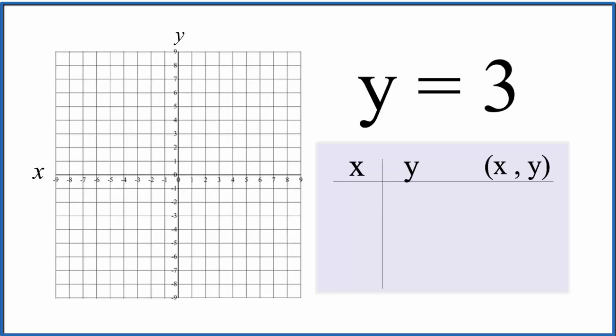So if we go to 3 on the y-axis here, 1, 2, 3, and put a horizontal line through it, this is the graph for y equals 3. Put some arrows to show that it goes to infinity. That's our graph.